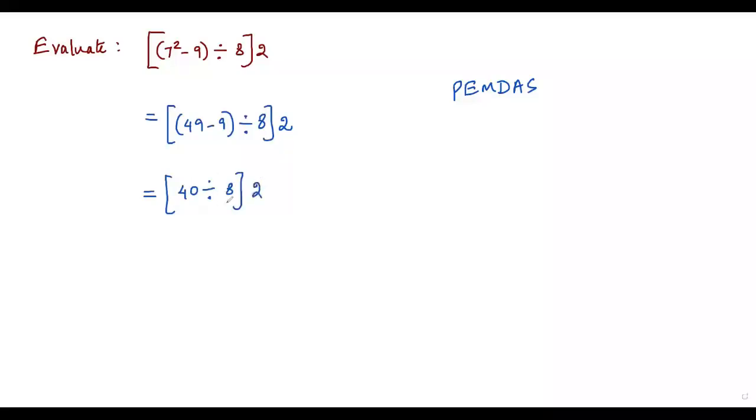Now I have to evaluate the stuff inside the square bracket: 40 divided by 8. When I divide 40 by 8, I get 5, so 5 times 2 equals 10. The evaluation of the given numerical expression is 10.